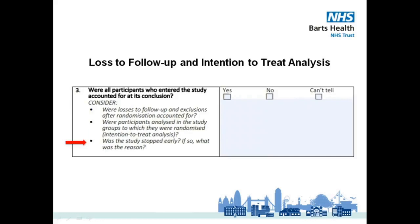Studies can be stopped early for various reasons, from lack of funding to safety reasons. This is the last point we are asked to consider. There is no indication that the study was stopped early. So, were all participants who entered the study accounted for at its conclusion?